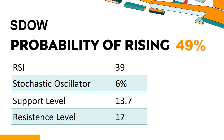The current stochastic oscillator of SDOW is 6%. When the indicator falls below the 20 level, it is usually considered oversold, indicating that a price rebound or recovery is likely for the stock. An oversold condition occurs when the stock price falls too fast and too much in a short period of time, which may indicate that the selling pressure has exhausted.